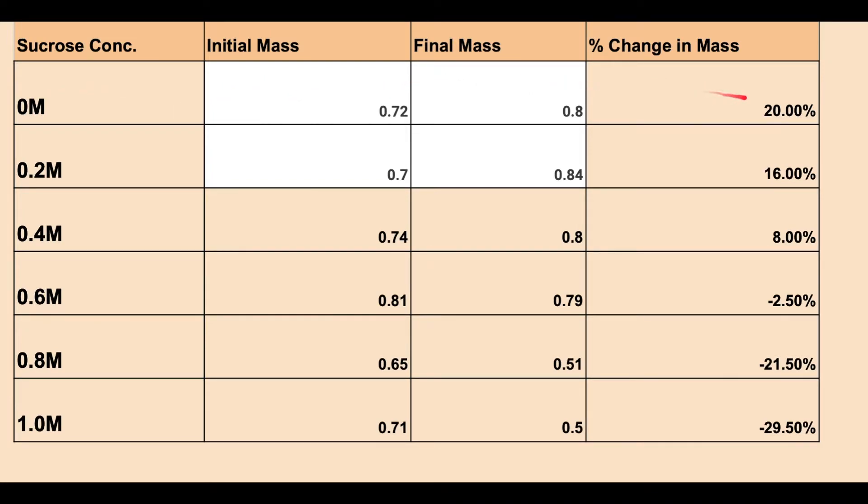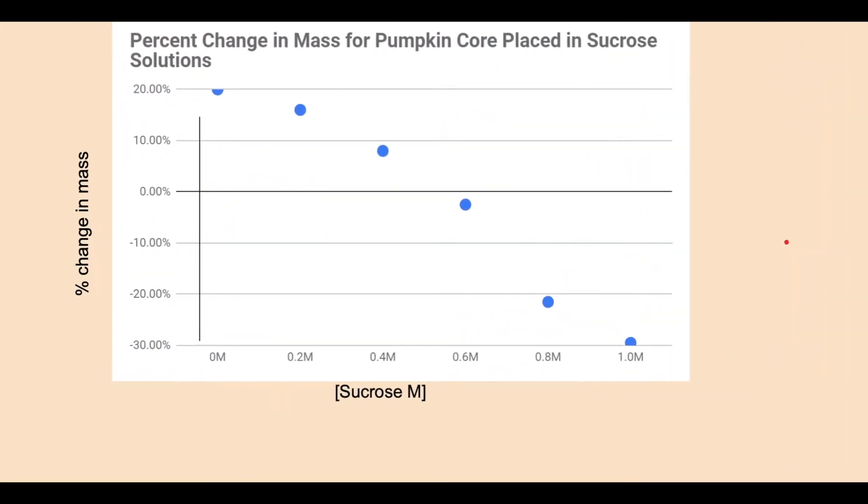The percent change in mass in the 0 molar looks like it's pretty high, and then it starts gaining less, and then it does become negative. So it starts losing weight after someplace between 0.6 and 0.4 is the area where it's going to be isotonic. But in order to do that, we have to graph the data.